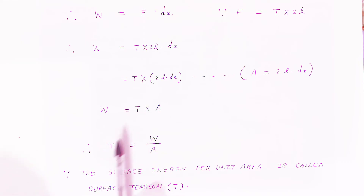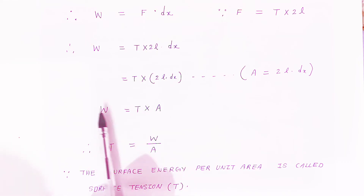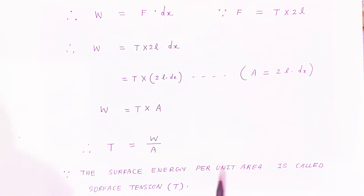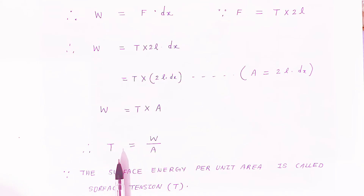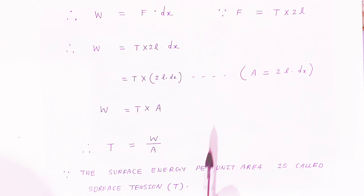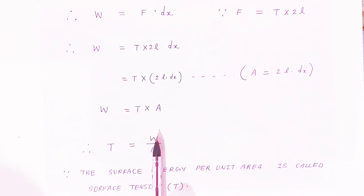Therefore, surface tension T can also be written as work done divided by area. So surface tension is nothing but surface energy per unit area. In the last video we saw surface tension as force per unit length; here we have another important relation: surface tension equals work upon area.